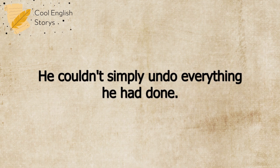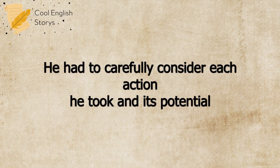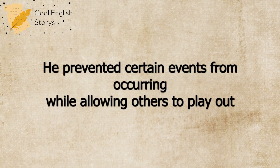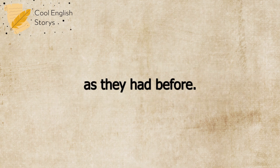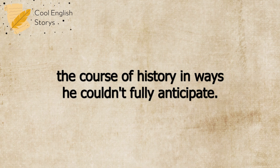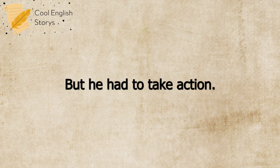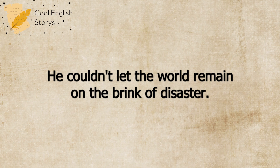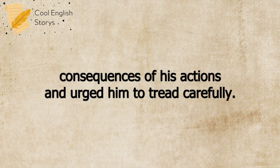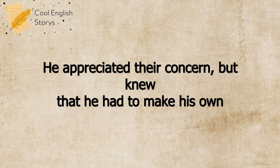He realized that he had to take a more nuanced approach to fixing the timeline. He couldn't simply undo everything he had done. He had to carefully consider each action he took and its potential consequences. He began to make small changes, tweaking the timeline in subtle ways. He prevented certain events from occurring, while allowing others to play out as they had before. He knew that each change he made had a ripple effect, altering the course of history in ways he couldn't fully anticipate. But he had to take action — he couldn't let the world remain on the brink of disaster. As he worked, he encountered other time travelers who were monitoring his actions. They warned him of the potential consequences of his actions and urged him to tread carefully. He appreciated their concern, but knew that he had to make his own decisions.